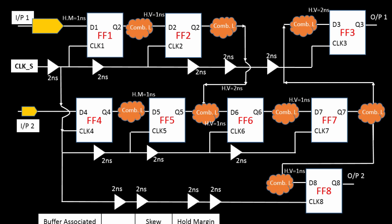First, we check whether the global skew is within range; if not, we fix it. Once done, we focus on local skew. Just as a reminder, global skew is the difference in delay between the shortest clock path and the longest clock path. In this circuit, to calculate global skew, you first find which path is the shortest and which is the longest.